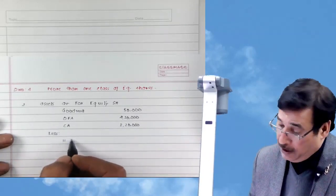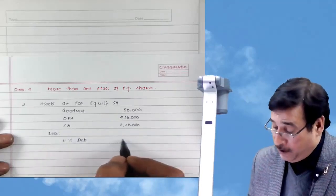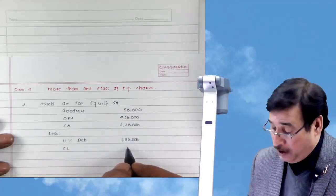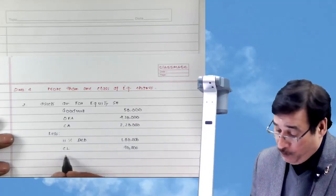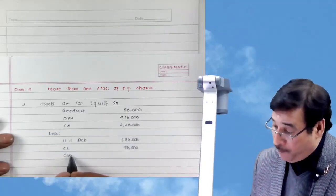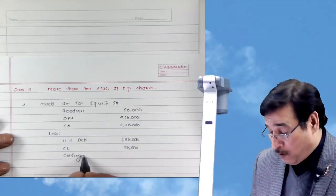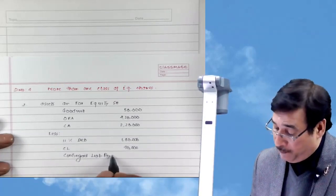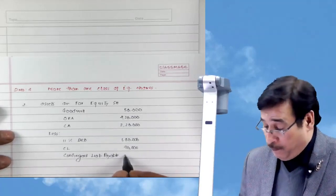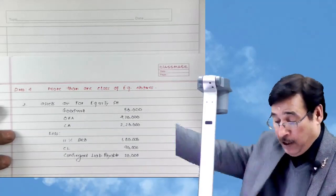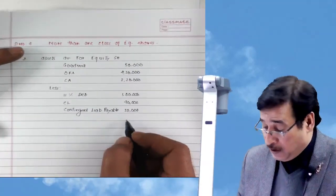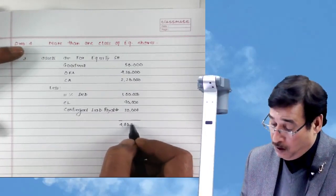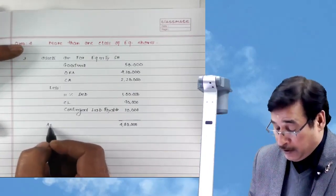From these assets we subtract liabilities. First, 11% debentures of ₹1 lakh. Then current liabilities of ₹90,000. Besides these, the contingent liability of ₹20,000 has now become a real liability and must be subtracted. By subtracting all liabilities from assets, we get net assets of ₹4 lakh 80,000.